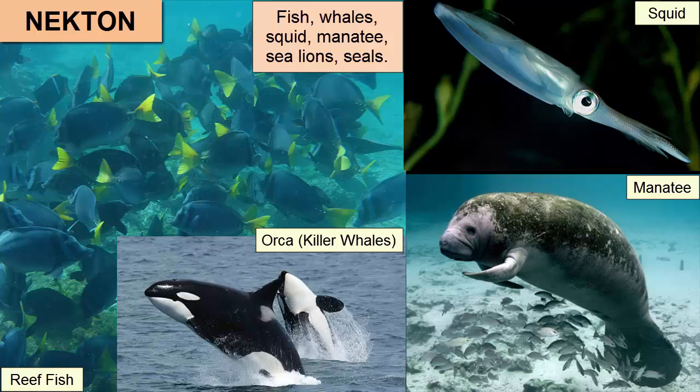Nekton are organisms that spend most of their time in the water column and can swim freely and faster than currents. Examples include whales, most fish, and squid.